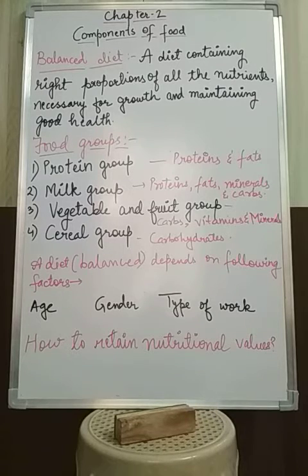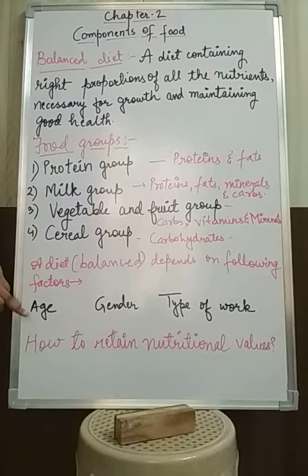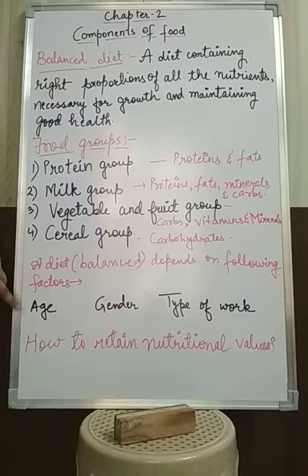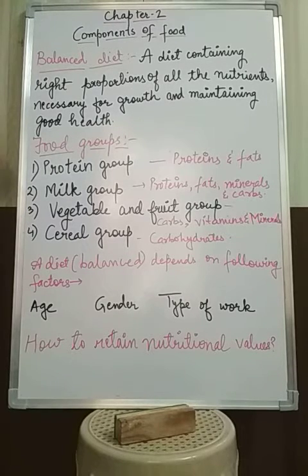Different people have different diets based on different factors. A balanced diet depends on age, gender, and type of work. Age matters because a growing teenager needs more protein compared to an adult, since they are in a growing state. A growing child needs all nutrients in proper amounts to grow properly.